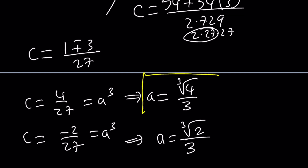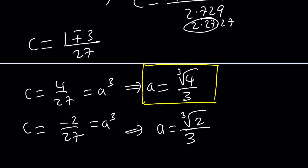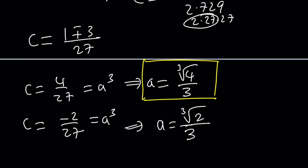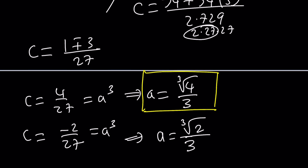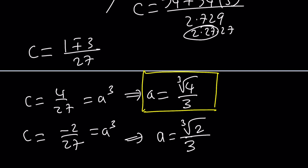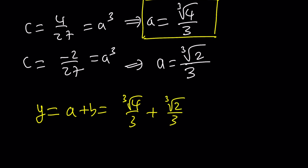If I use this one — if a equals one of these cube roots, then b should be the other. If one value is a, the other should be b. So I can write y as a plus b, which is the cube root of 4 over 3 plus the cube root of 2 over 3. So that's the y value, just one of them.